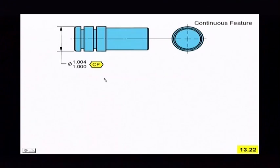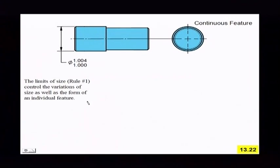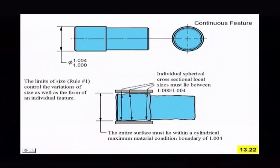Now first, maybe before I talk about continuous feature, let's just look at it as just one single feature here, one inch to one inch four thousandths. Al already talked about the limits of size and what that controls. It controls the size and the form of that individual feature. So that entire feature has to lie within this one inch four thousandths boundary here.